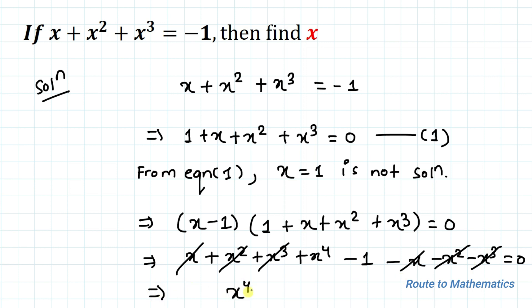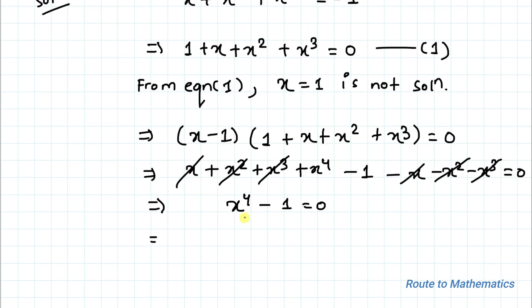So we have x⁴ - 1 = 0. Since this is a degree 4 equation, it must have 4 solutions. Let's find all the solutions.